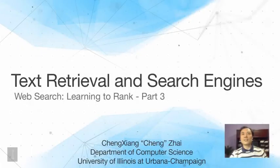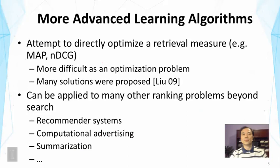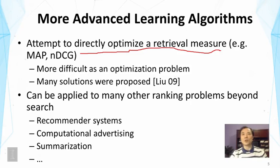There are many more advanced learning algorithms than the regression-based approach, and they generally attempt to directly optimize the retrieval measure, like MAP or NDCG. Note that the optimization objective function we have seen on the previous slide is not directly related to the retrieval measure. By maximizing the prediction of 1 or 0, we don't necessarily optimize the ranking of those documents.